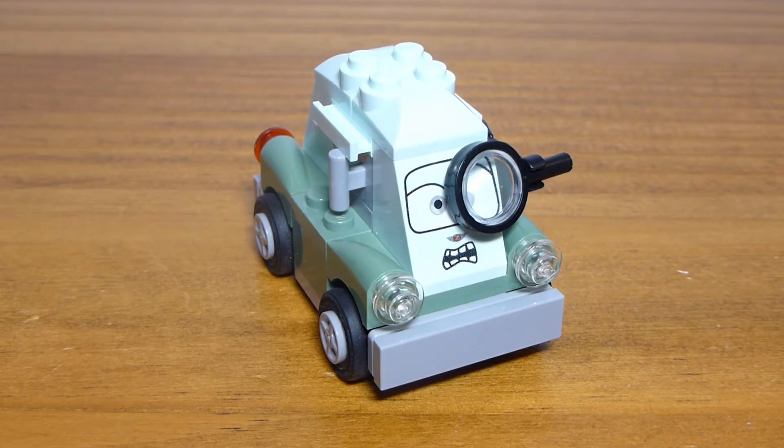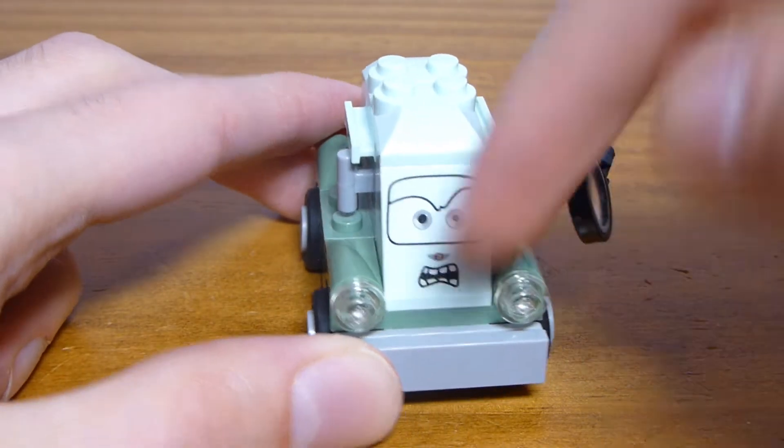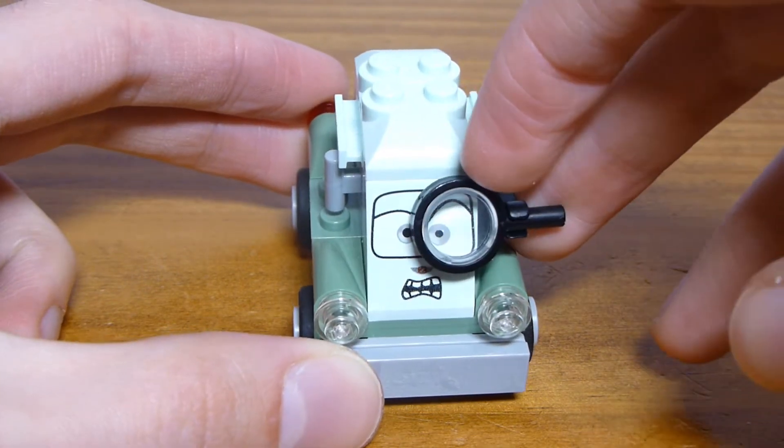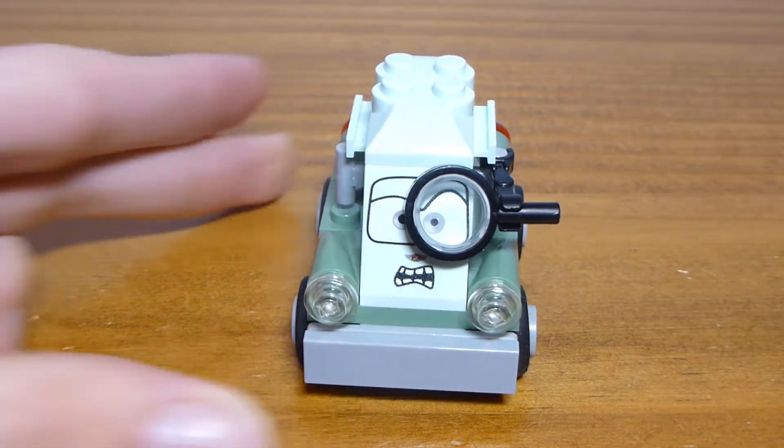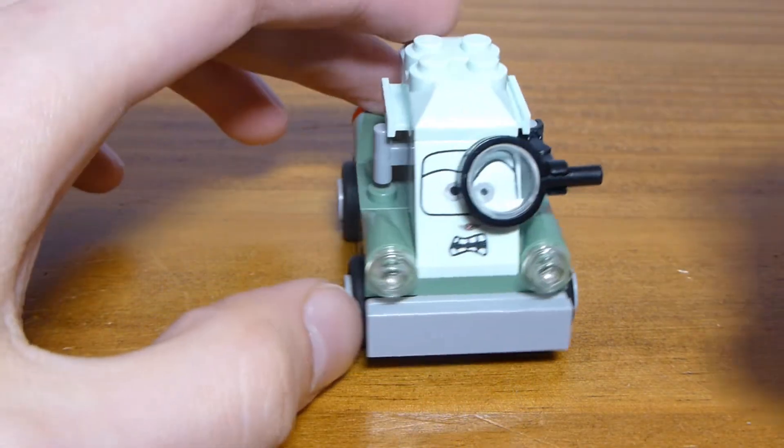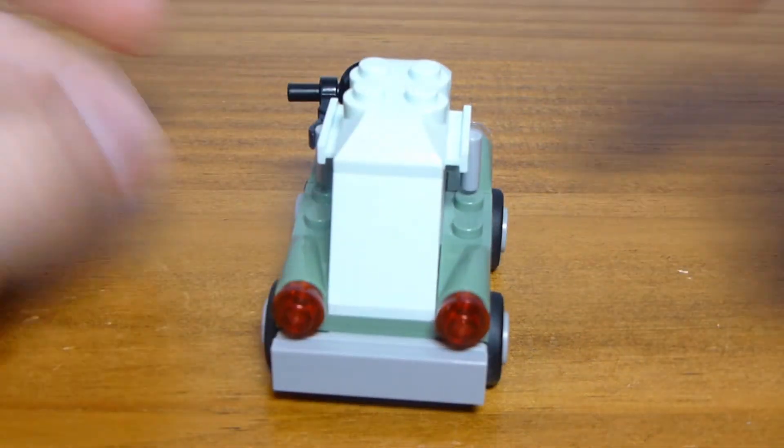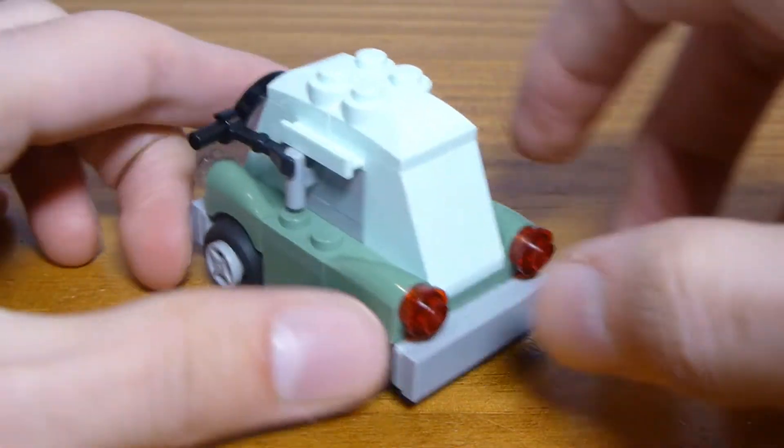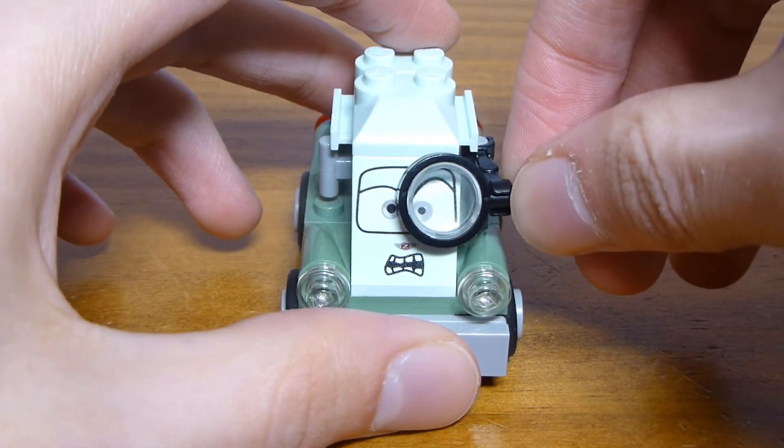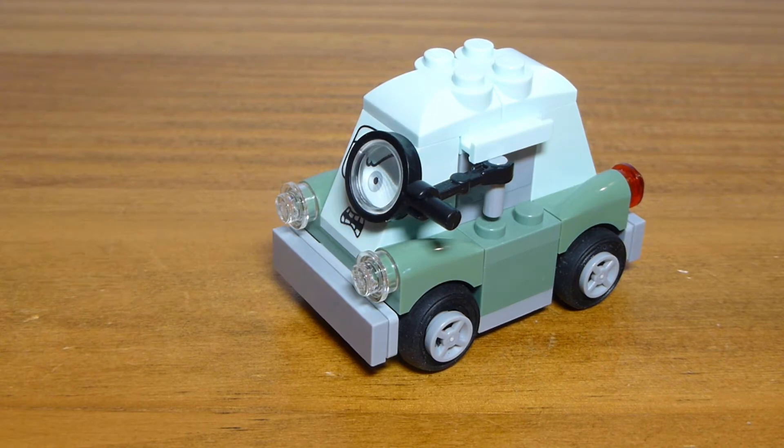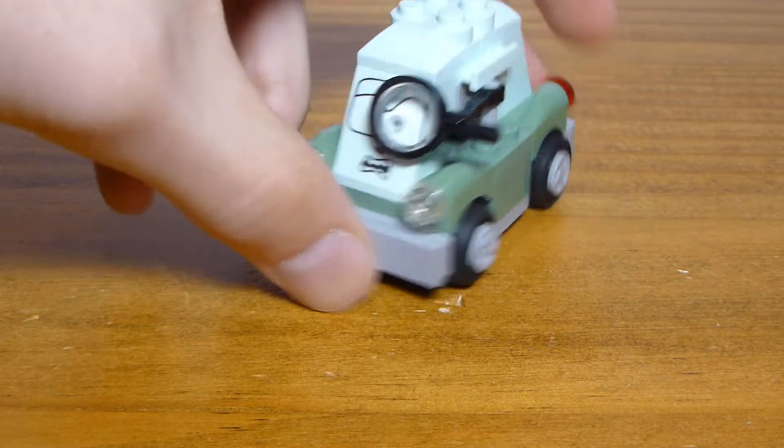Next up, we have Professor Zundapp, who also appeared in a couple of the first year of Cars 2 sets. But in those sets, he also had a different facial expression, making this one exclusive. This is a printed one by two by two by two tall slope. It's a good facial expression, more accurately expressive than the original. I like the use of the magnifying glass to give him the monocle.